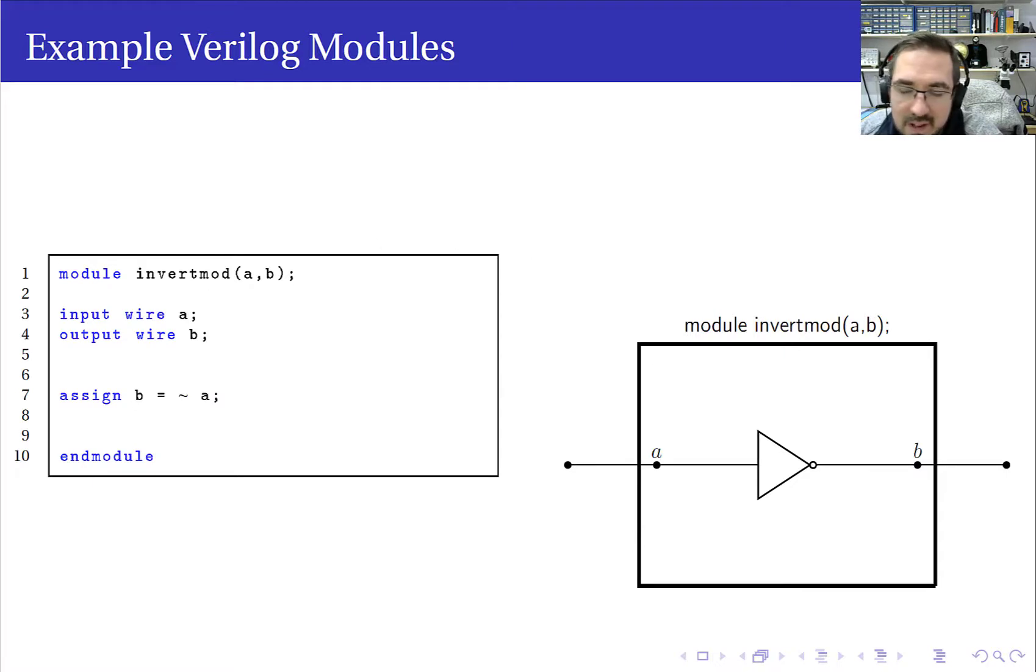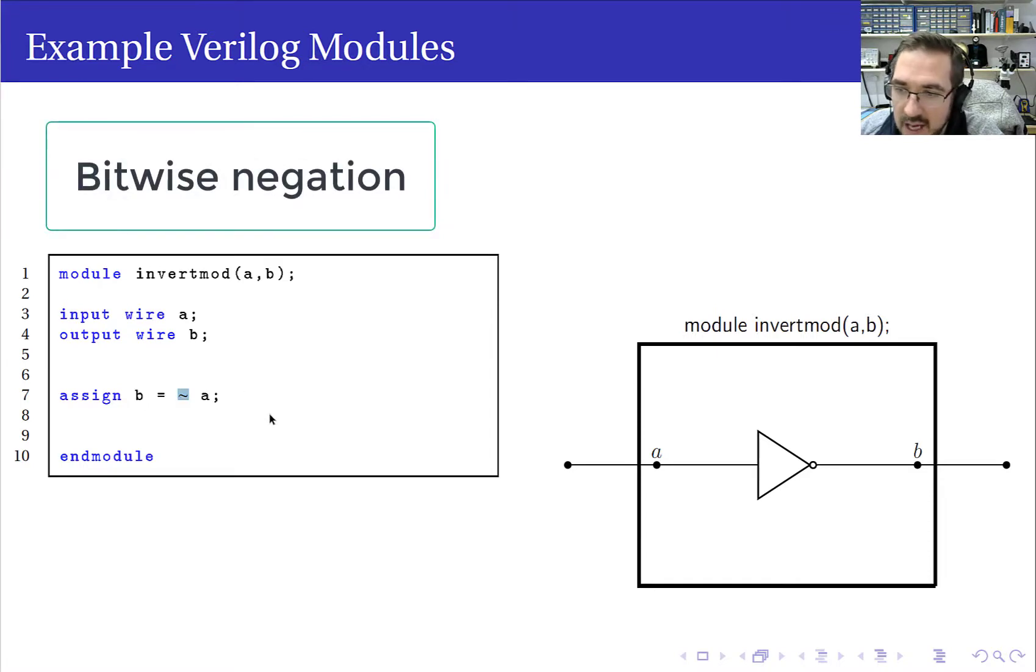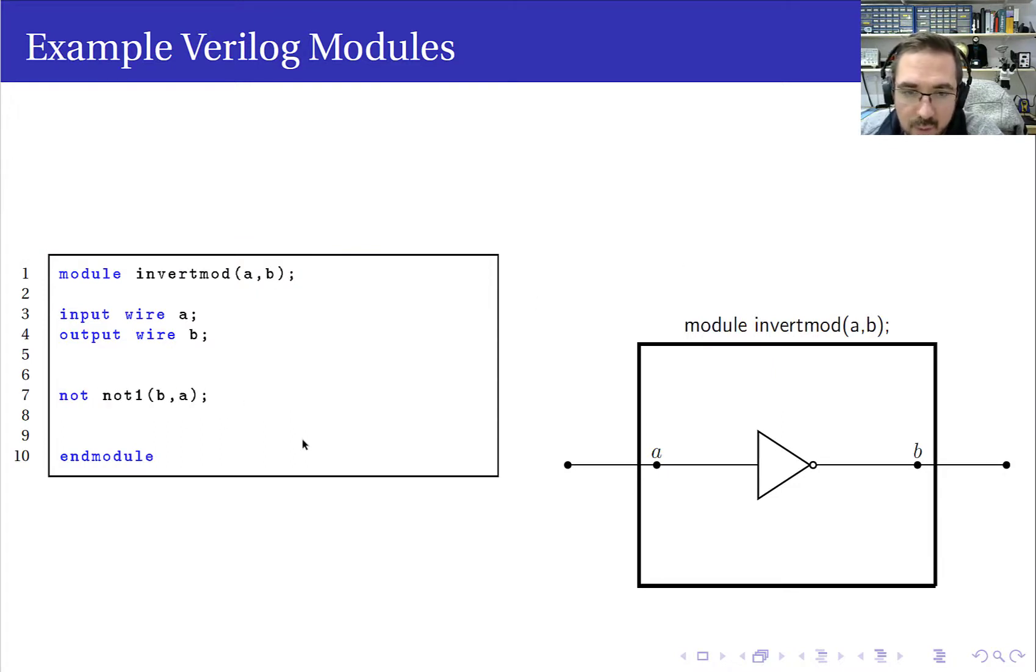Okay, so this one I've kept the name as invert mod, but this time we've used an assign statement, and we've got a blocking assignment here. And it's just saying B is equal to the tilde symbol—in Verilog, means NOT. So B is equal to NOT A. So that will actually give you exactly the same as the first one, which was using a NOT gate. So that is a very simple module.